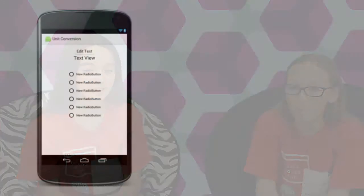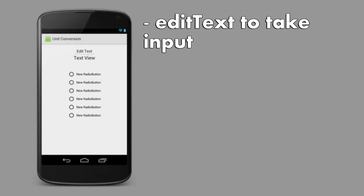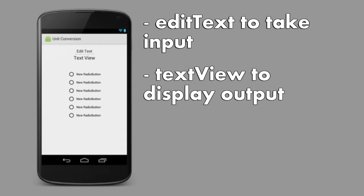Specifically, the user will be able to type in a number, use radio buttons to select their conversion, then see the result. The app will need an edit text that takes decimal numbers as input. It will also need a text view to display the output.